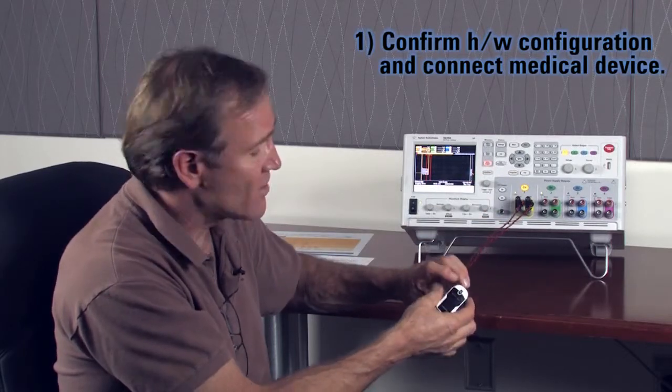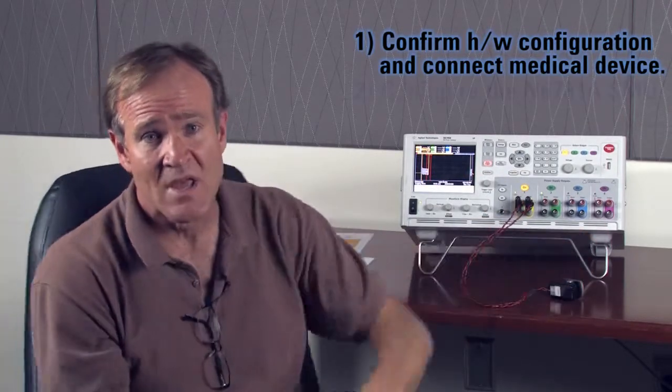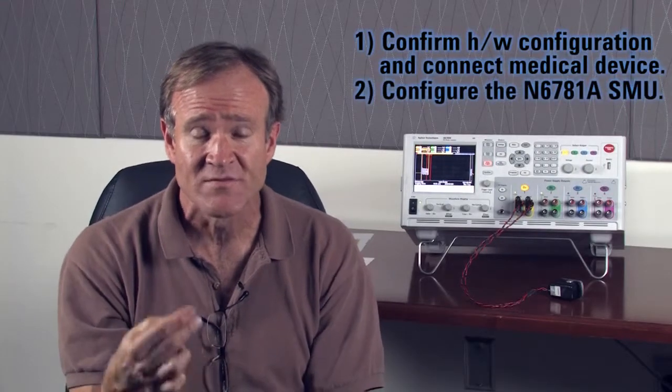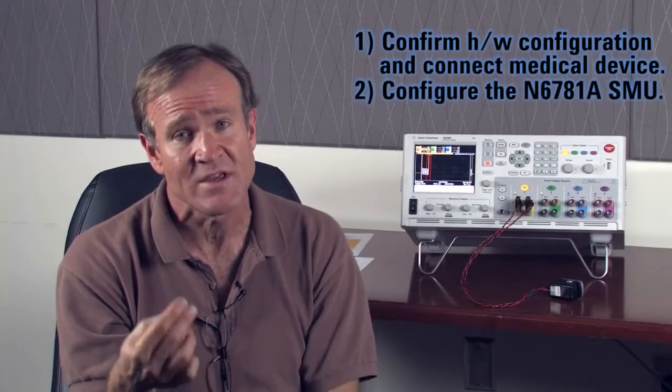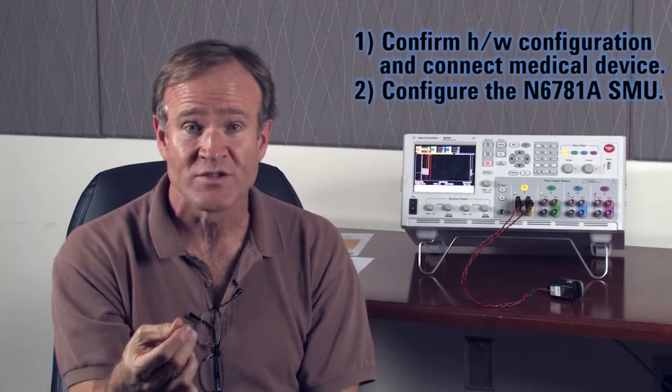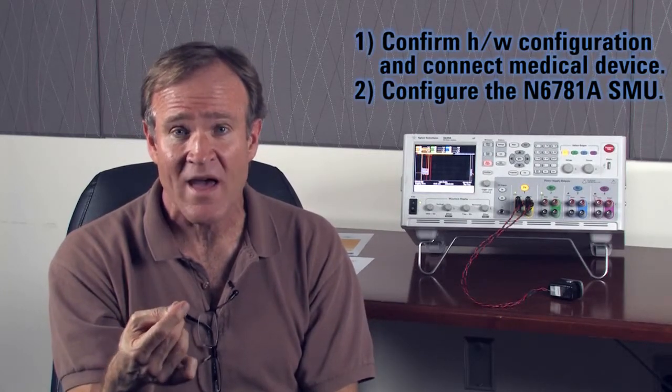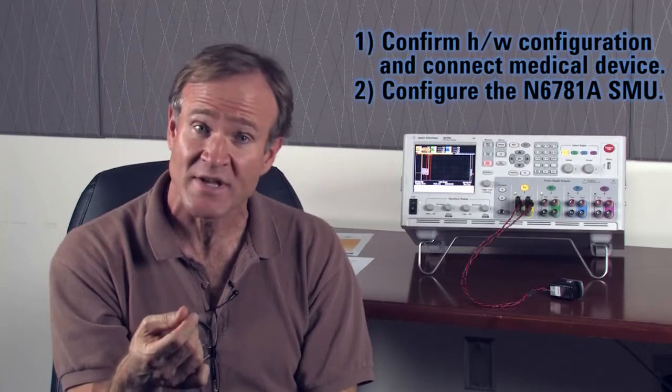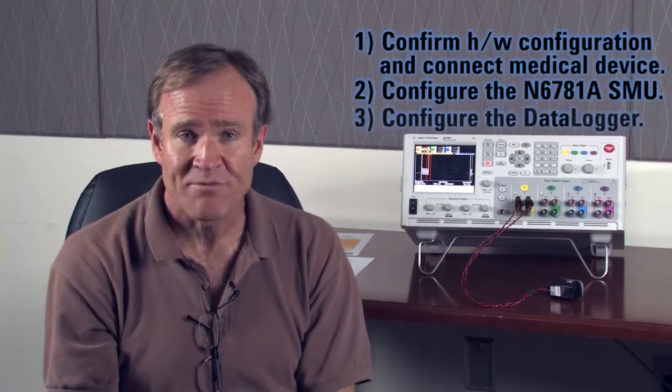Step two is configuring the SMU. The main thing to remember when you're configuring that is outputting the voltage that you expect and making sure that you have the output voltage bandwidth set to low.